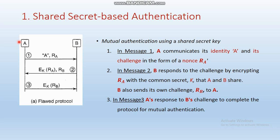In response, party B chooses another random number RB. B also encrypts the random number RA that was sent by party A, and this encryption is done using the shared secret key K. B sends back RB and the encrypted RA to party A.